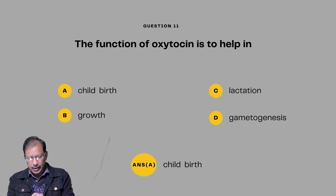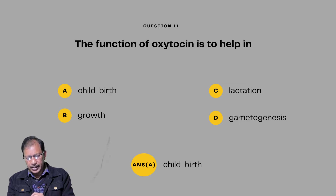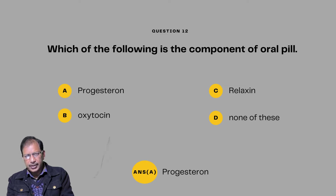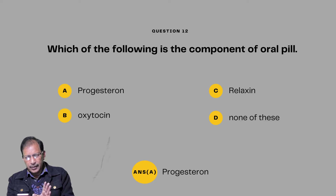Question number eleven: The function of oxytocin is to help in — childbirth, growth, lactation, or gametogenesis. Answer will be childbirth. Question number twelve: Which of the following is the component of the oral pill? Options are: A — progesterone; B — oxytocin; C — relaxin; D — none of these. The oral pill in females prevents fertilization of the egg. Answer will be progesterone.